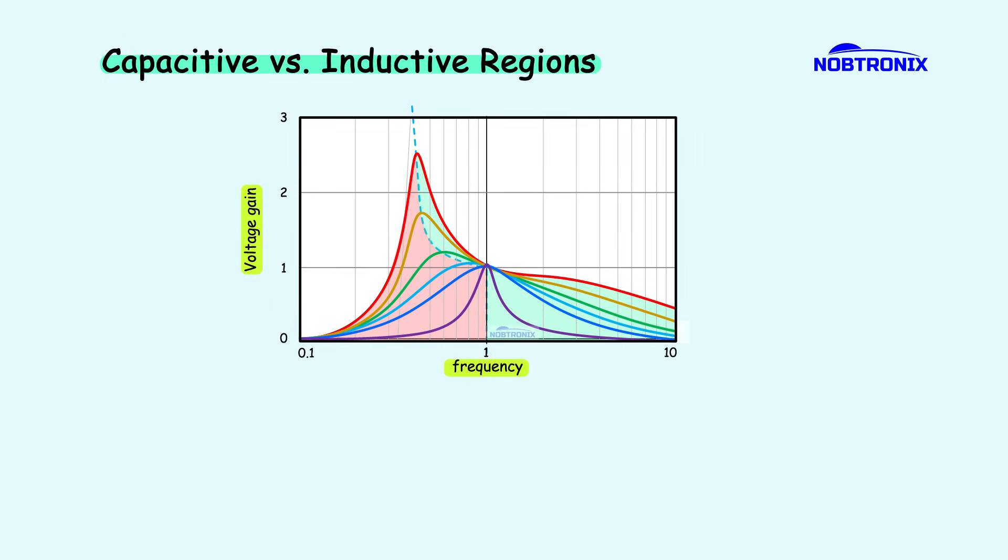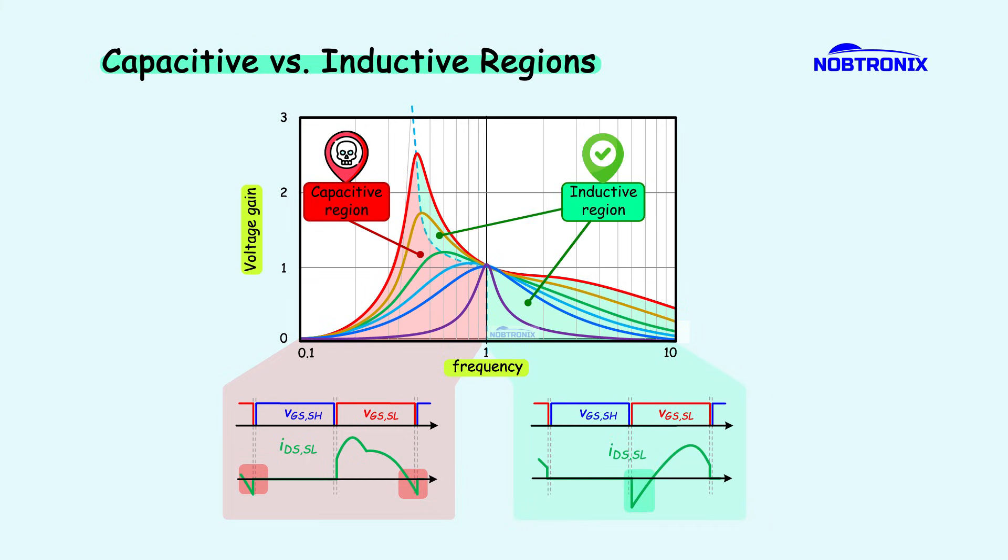Then, frequencies lower than the peak gain frequency define the capacitive region, where the capacitive reactance exceeds the inductive reactance of the resonant tank, while frequencies higher than the peak define the inductive region. Operating in the capacitive region eliminates ZVS, leading to high switching losses.